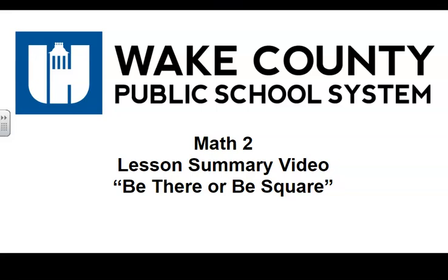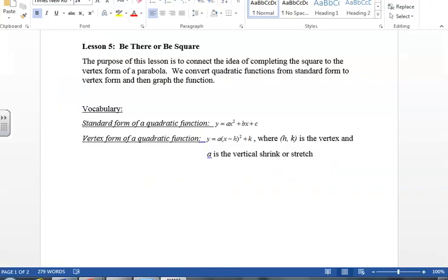This is the Math 2 Lesson Summary video for Be There or B Square. In Lesson 5 of Unit 4, Be There or B Square, the purpose of this lesson is to connect the idea of completing the square to the vertex form of a parabola.